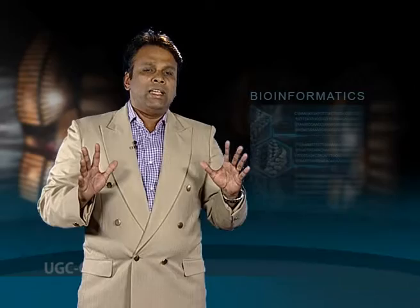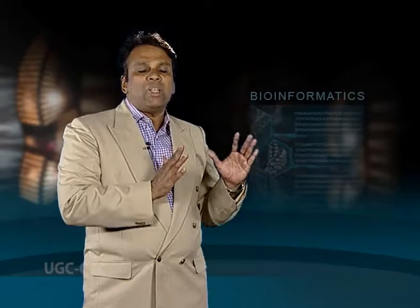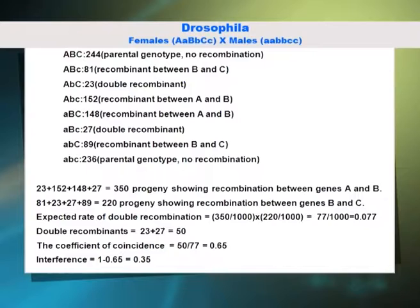From these numbers it is clear that the B-b locus lies between the A-a locus and the C-c locus. There are 350 progeny showing recombination between genes A and B, and 220 progeny showing recombination between genes B and C. Thus the expected ratio of double recombination is 77 divided by 1000, equal to 0.077.